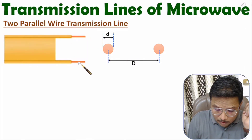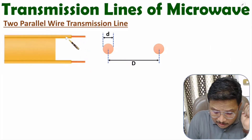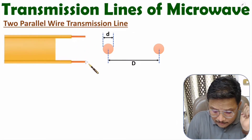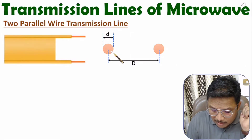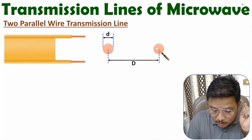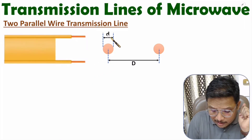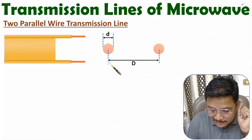If you observe the cross section of this transmission line, we have two conductors shown by two dots — that is the cross section — where the diameter of this wire is small d, and the spacing between these two wires is capital D.